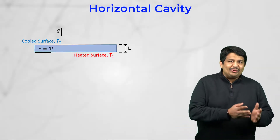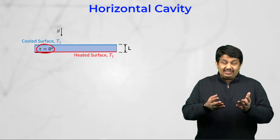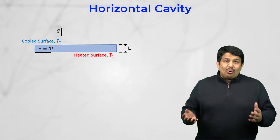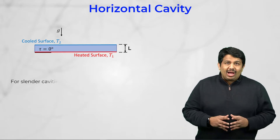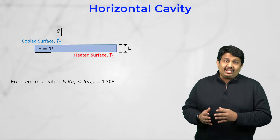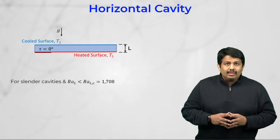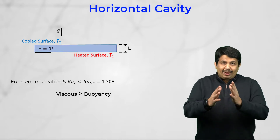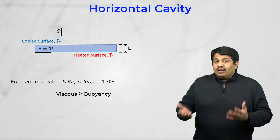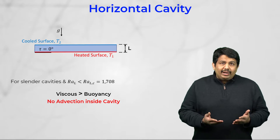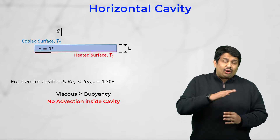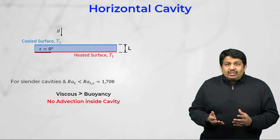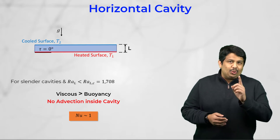Let us first look into the horizontal rectangular cavities where tau is equal to 0. For thin, slender cavities with H over L and W over L much greater than 1, and Rayleigh numbers lower than a critical value of 1708, the buoyancy forces are not strong enough to overcome the viscous resistance offered by the fluid. Under these conditions, there is no advection of fluid and the primary modes of heat transfer across the cavity are conduction and radiation, if any. The Nusselt number in this scenario is approximately equal to 1.